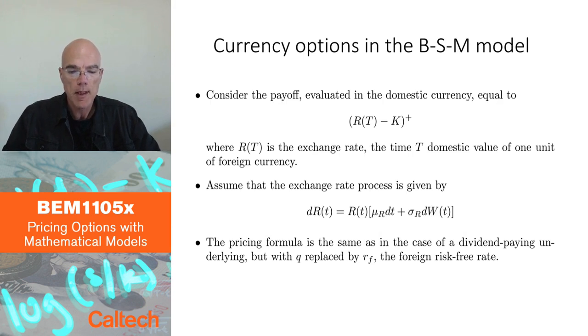I'm going to look at the call option on the exchange rate, which is denoted capital R for rate. It's a random process, and for example, R at capital T is the amount in dollars, if that's the domestic currency, of one unit of foreign currency. It's the domestic value of one unit of foreign currency, therefore the exchange rate at time capital T, the maturity of the option.